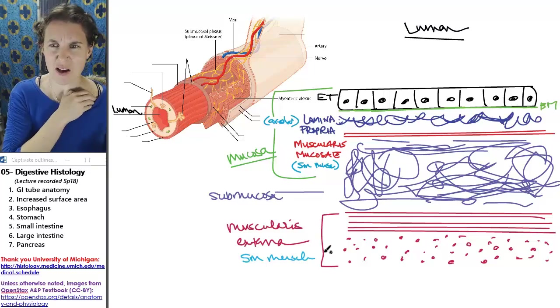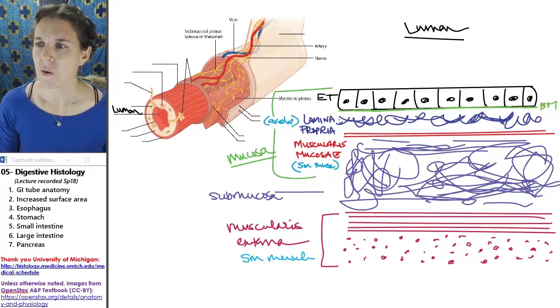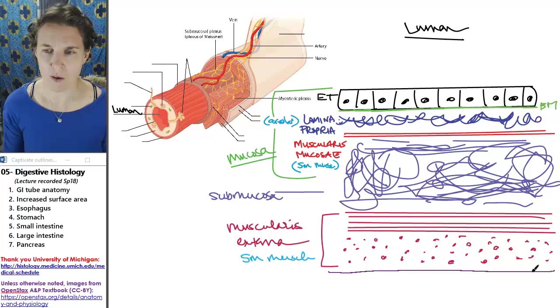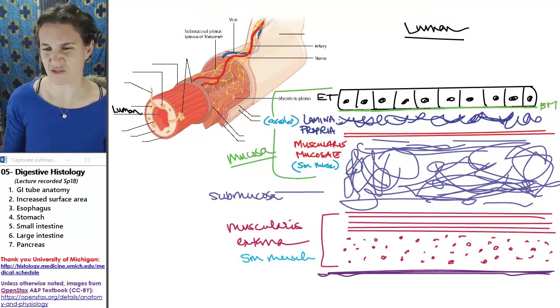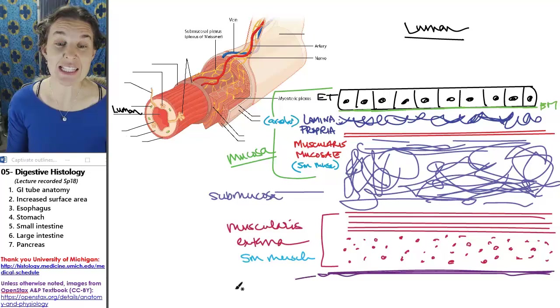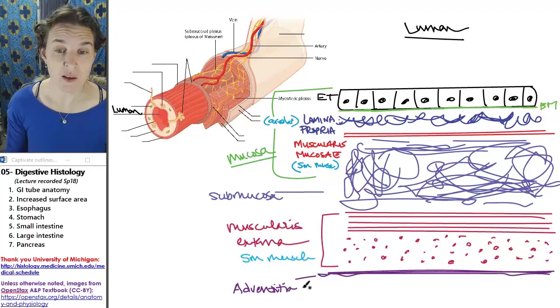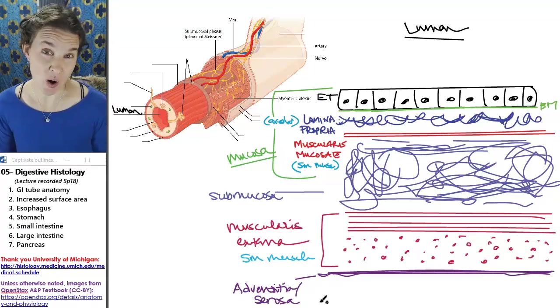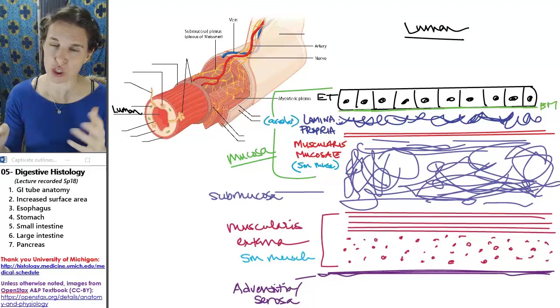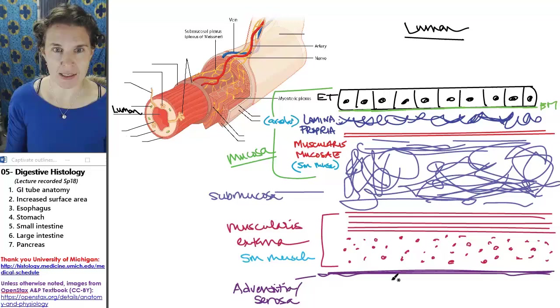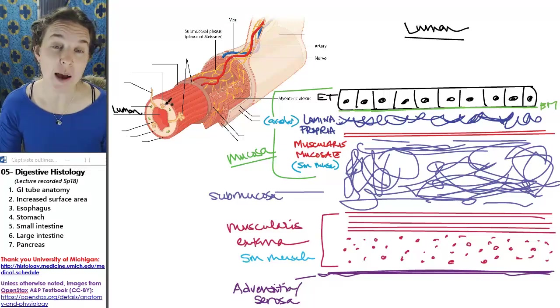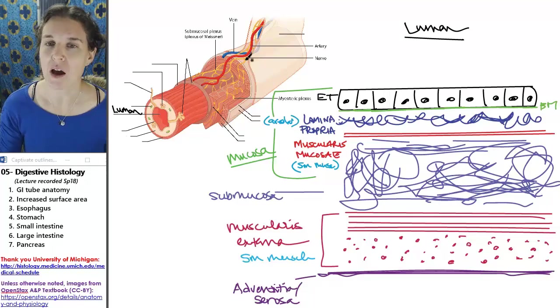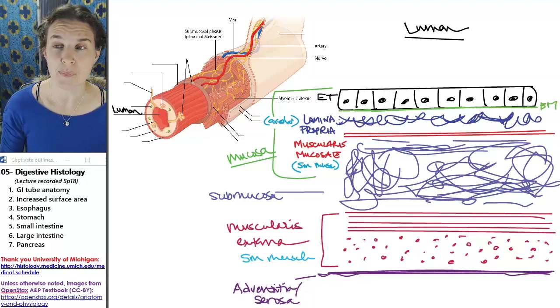I'm going to do this last layer kind of vague, and the last layer is either the adventitia or the serosa, and it depends on where you are whether you are going to be an adventitia or a serosa. This whole thing is your digestive tubing. Now I'm going to label it on this tubular diagram for you. So check it out. We've got our lumen.